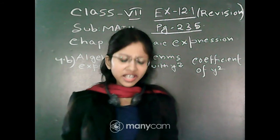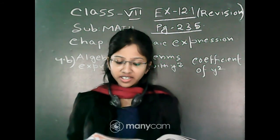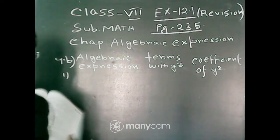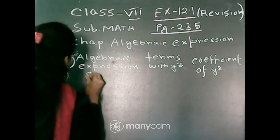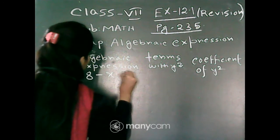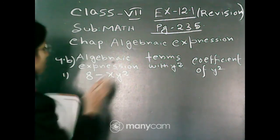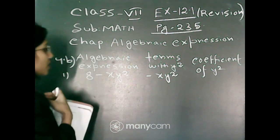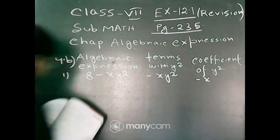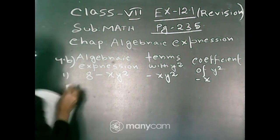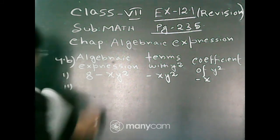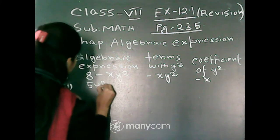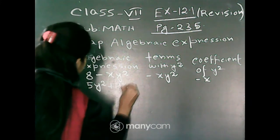Question 4b, number 1. Identify terms which contain y square and give the coefficient of y square. Here the given algebraic expression is 8 minus xy square. Therefore, the term with y square is minus xy square, and the coefficient of y square is equal to minus x.